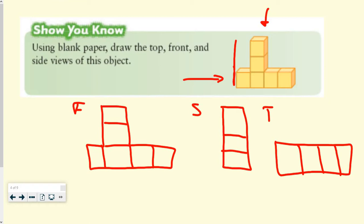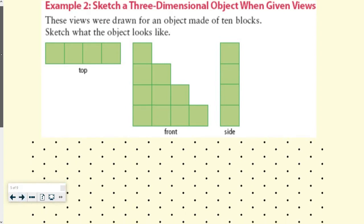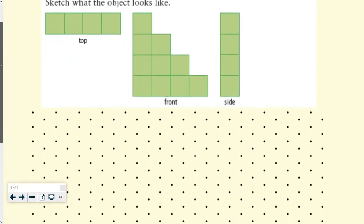I know my lines are off, but that's the way it is. Example two, sketch a three-dimensional object when given view. So if we know that the top looks like that, the front looks like that, and the side looks like that, we know that it's going to look like here, I'm going to start with the front,